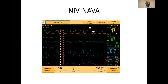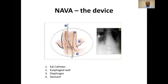By the way, NAVA can also be delivered invasively. The device is an EDI catheter, which is a special feeding tube with electrodes at the end that pick up the electrical signal of the diaphragm. The EDI catheter or NAVA catheter is inserted exactly like any feeding tube, and the position is further refined using the ECG on the screen of the ventilator.